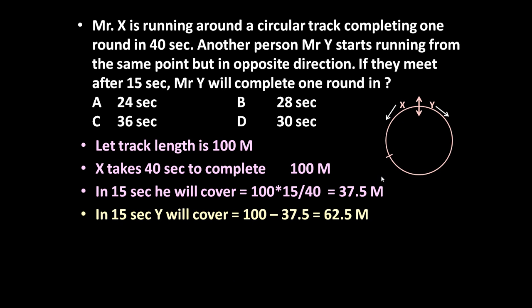The distance covered by Y in 15 seconds will be 100 - 37.5. Total is 100, this is 37.5. So this distance will be 100 - 37.5 = 62.5. At this point X reaches in 15 seconds, Y also reaches here in 15 seconds.